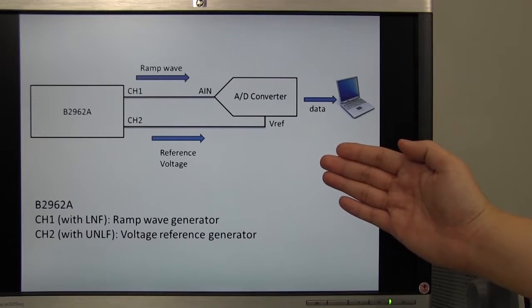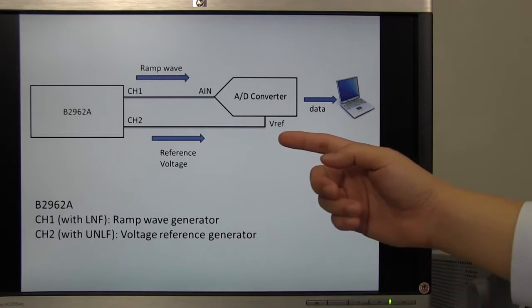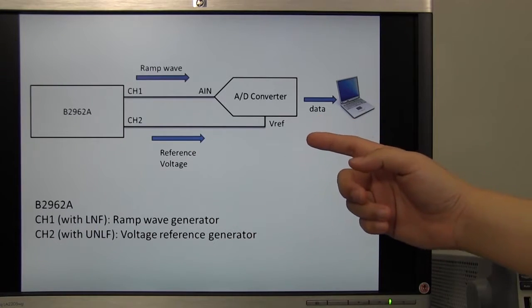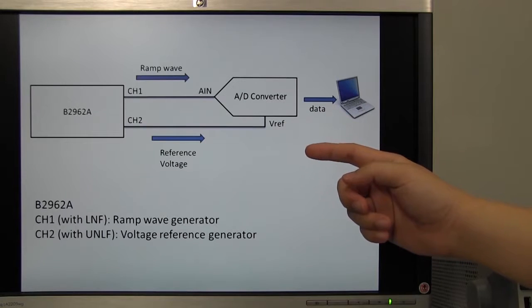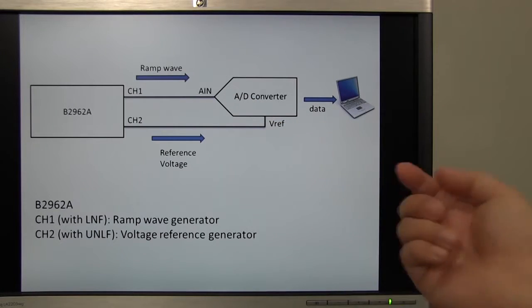This figure shows how the measurement system is wired. B2962A's output terminals are connected to the AD converter, analog input pin, and voltage reference pin by coaxial cables.